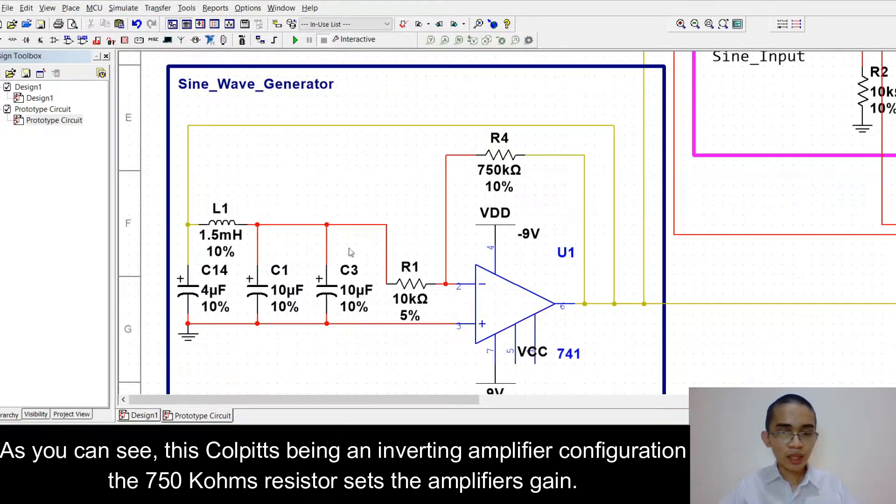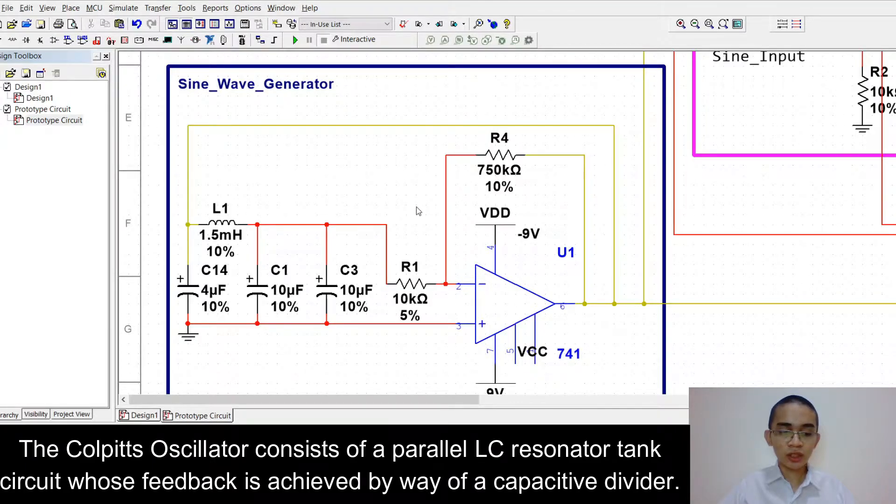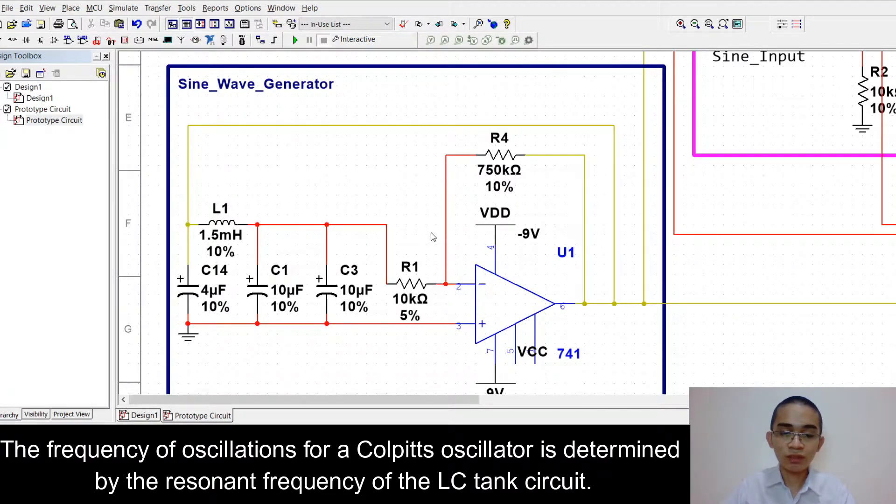As you can see, these Colpitts being an inverting amplifier, the configuration of the 750 kilo ohms resistor sets the amplifier gain. This Colpitts oscillator consists of parallel LC resonator tank circuit whose feedback is achieved by the way of a capacitive divider. The frequency of the oscillations for Colpitts oscillator is determined by the resonant frequency of the LC tank circuit.